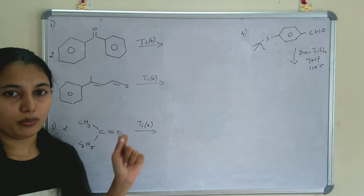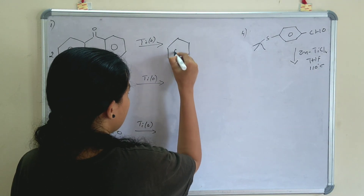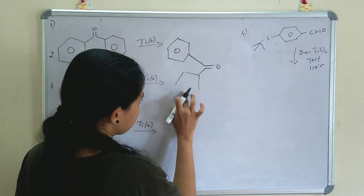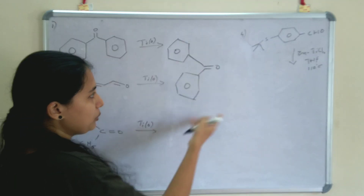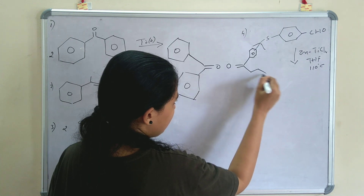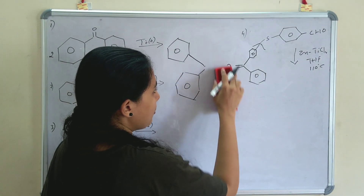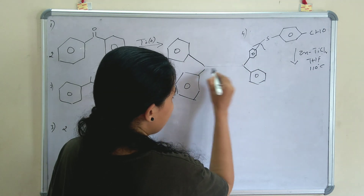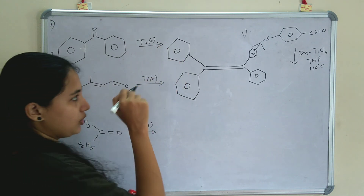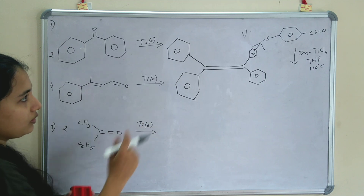In the first example, a ketone is given. We know McMurry coupling is the coupling of two ketones or aldehydes. So how can we write the product? We write the reactant: a benzene ring with a C=O, coupled with itself. To write the product, you just erase the C=O double bond and put a C=C double bond in its place. So an alkene is formed — C double bond O is replaced by C double bond C. Here there is no stereochemistry to explain.